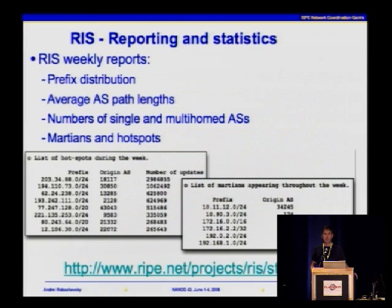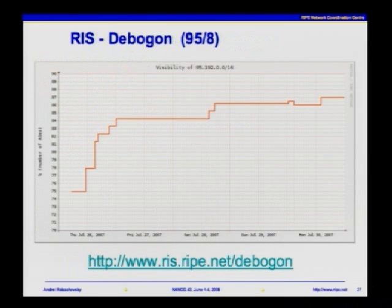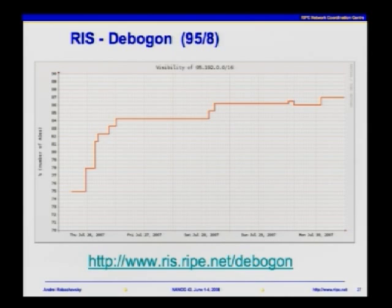We produce several reports similar to those from other projects like RouteViews, available from our site statistics. Based on RIS data, we also provide a service to several regional internet registries such as APNIC, LACNIC, and AFRINIC. When IANA allocates a new slash 8, we de-bogon this slash 8 — meaning we announce a few prefixes and let ISPs check if those prefixes are reachable, and we also look at RIS data to verify reachability. This graph shows visibility of a prefix over time — soon after the prefix is announced, already 75% of ISPs see this prefix, which says something about the lack of filtering.